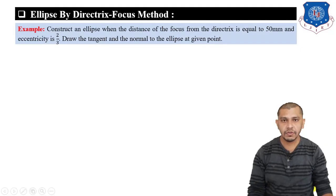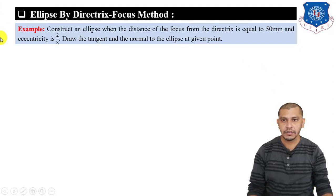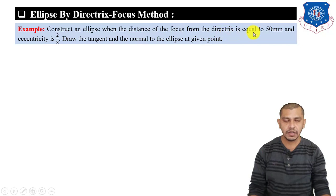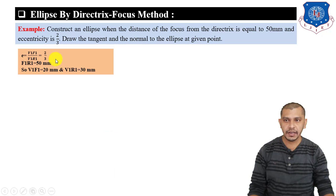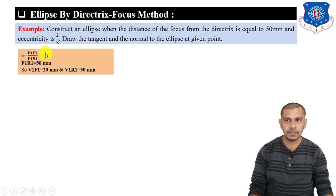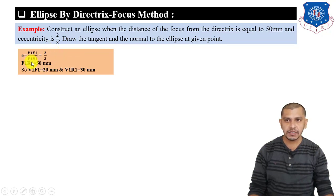Now let's move on to the directrix and focus method to construct an ellipse. The problem: construct an ellipse when the distance of the focus from the directrix is 50 mm and the eccentricity ratio is 2/3. The eccentricity ratio Vf/Vr = 2/3, and the total distance (focus to directrix) is 50 mm. So divide this 50 mm distance into 5 equal parts (2+3=5).